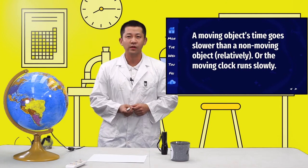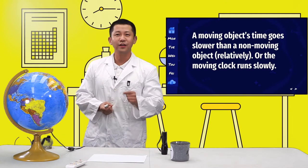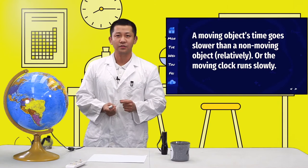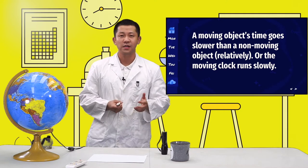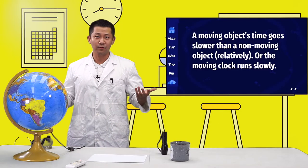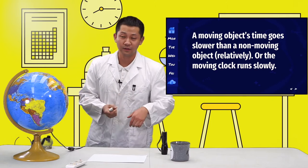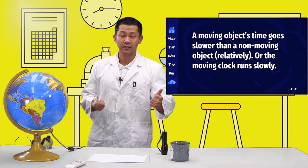The second conclusion is the moving objects' time goes slower than non-moving objects relatively. The moving clock runs slow. Think about if you have a clock on your wrist and you keep running. Compared to your classmate, your time's getting slower. It's very interesting, isn't it? It's unbelievable.